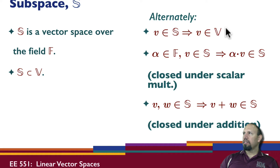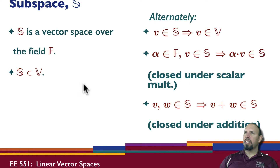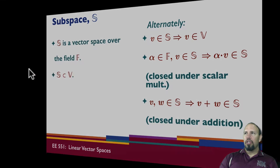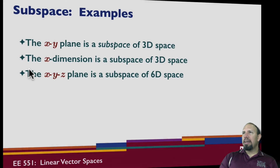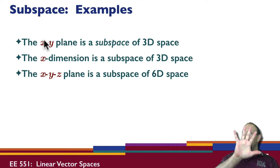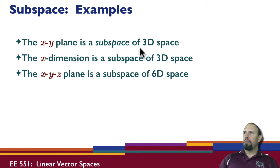So if it satisfies these three properties, it is a subspace of the vector space. This is another way of proving more explicitly these two properties. By way of example, in three-dimensional space, the xy-plane is a subspace of the 3D space.